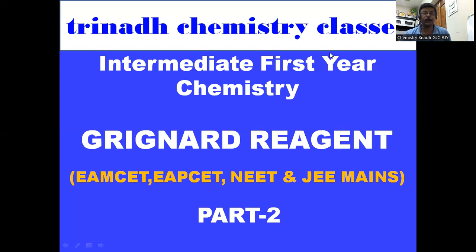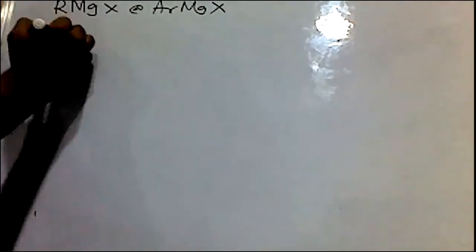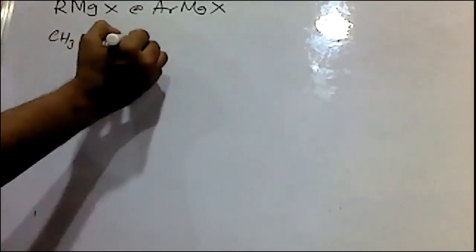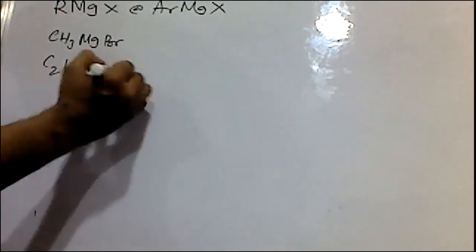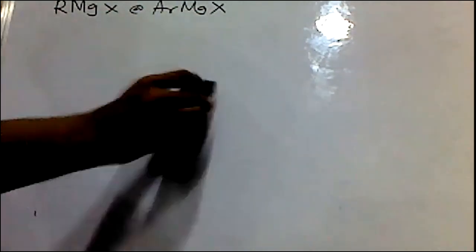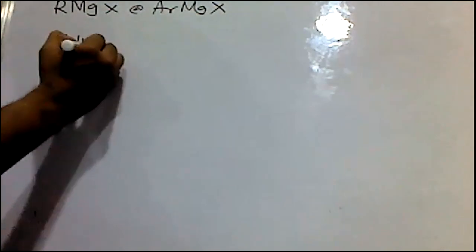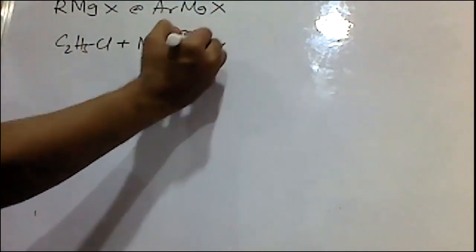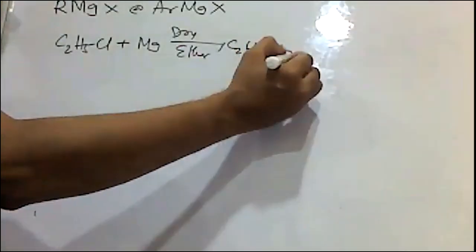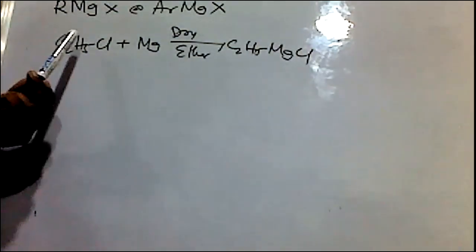Please like the video, share and subscribe the channel. Alkyl magnesium halide or aryl magnesium halide is called Grignard Reagent. For example, methyl magnesium halide and ethyl magnesium halide are Grignard Reagents. Grignard Reagent is prepared when alkyl halides are treated with magnesium in dry ether. In dry ether, Grignard Reagent is formed.